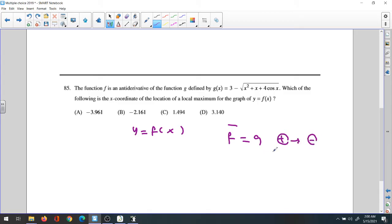The graph of y equals g of x crosses the x-axis from positive to negative at x equals 3.14. Of course, if you have your calculator, you could try that.